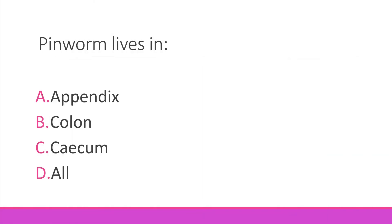Inworm lives in — the options are: alpha is appendix, beta is colon, C is cecum, and delta is 'all.' So the right option is delta — all.